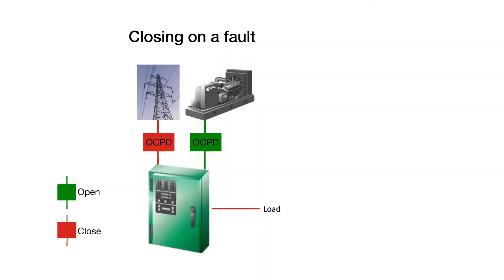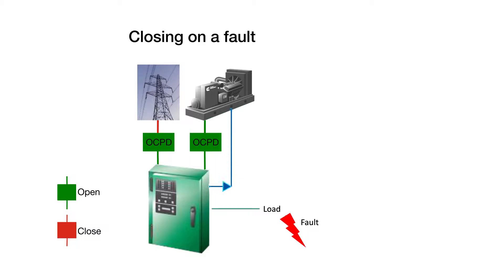Closing on a fault happens when the fault downstream still exists, causing the upstream over-current protective device (OCPD) of the ATS on the utility source, for example, to trip. Since utility power is no longer available, the ATS signals the generator to start and transfers the load to the generator, therefore closing onto the faulted load.